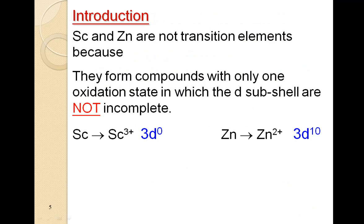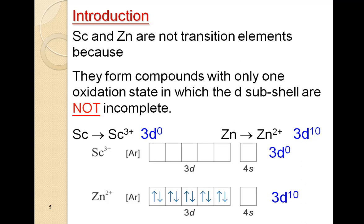Same is the case for scandium. Scandium forms compounds with only one oxidation state. Scandium exists in plus 3 oxidation state and in plus 3 oxidation state the configuration is 3D0, whereas in zinc, in plus 2 oxidation state, it is D10. So in both these cases, d is not incompletely filled.